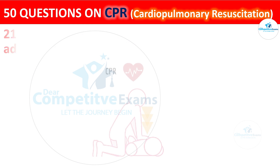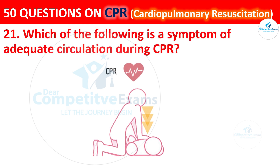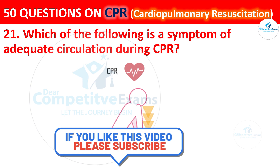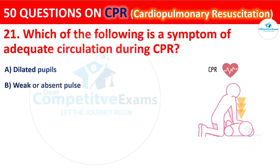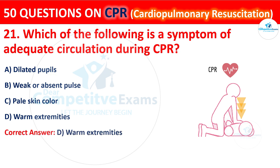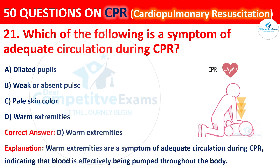Question 21: Which of the following is a symptom of adequate circulation during CPR? Your options are: Dilated pupils, Weak or absent pulse, Pale skin color, or Warm extremities. The correct answer is D: Warm extremities. Warm extremities are a symptom of adequate circulation during CPR, indicating that blood is effectively being pumped throughout the body.